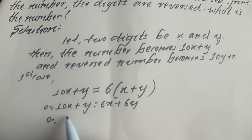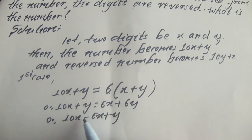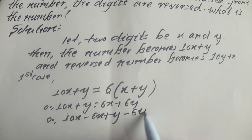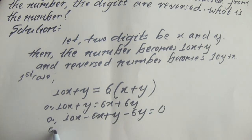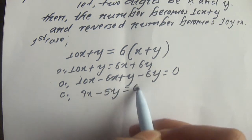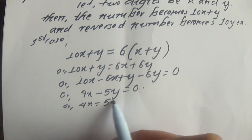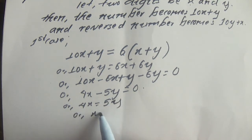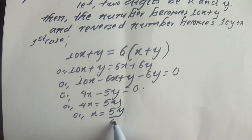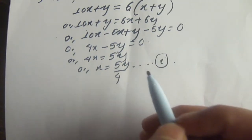Solving this equation: 10x minus 6x equals 6y minus y, which gives 4x equals 5y, so x equals 5y divided by 4. This is equation number 1.